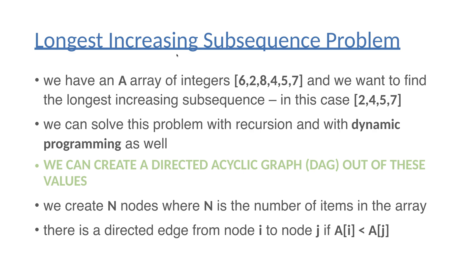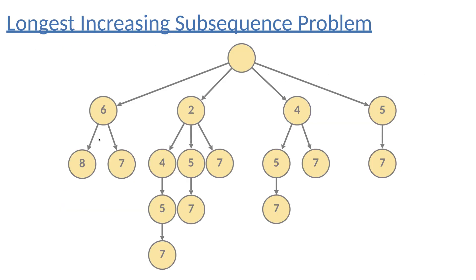The sequence 2, 4, 5, and 7 is the longest increasing subsequence because 2 is smaller than 4, 4 is smaller than 5, and 5 is smaller than 7. We can create a directed acyclic graph from these values. We have as many vertices in the graph as the number of integers in the array, and there is a directed edge from node i to node j if the ith item is smaller than the jth item. This allows us to construct a directed acyclic graph from the input.